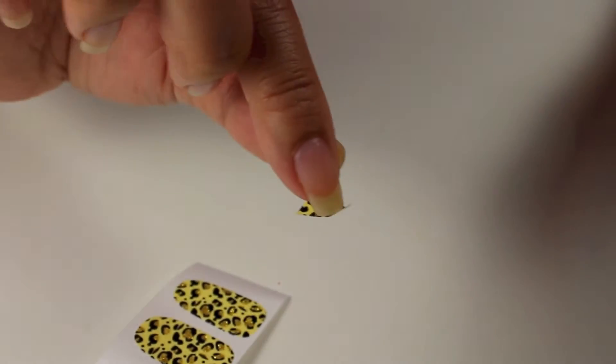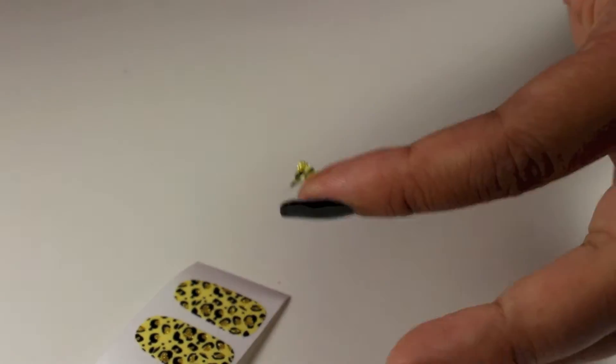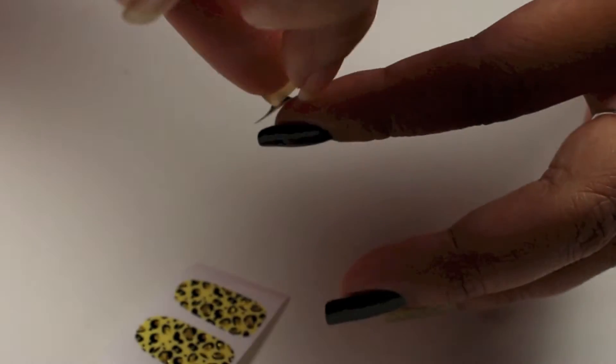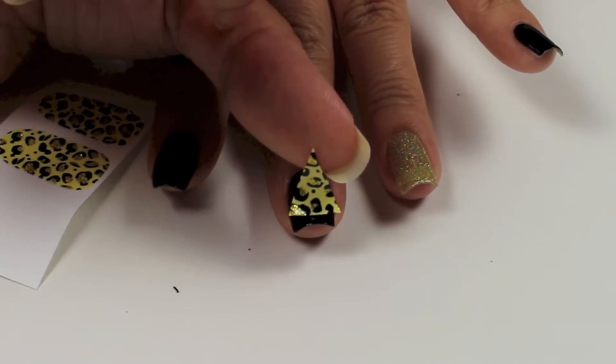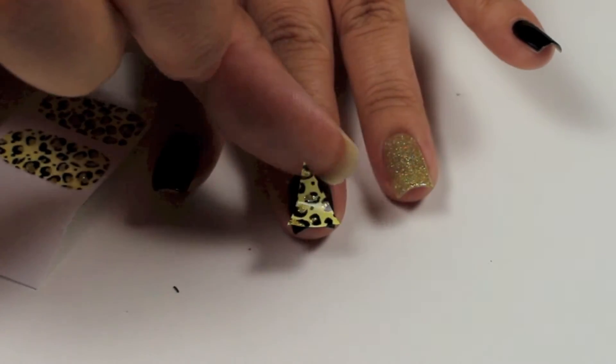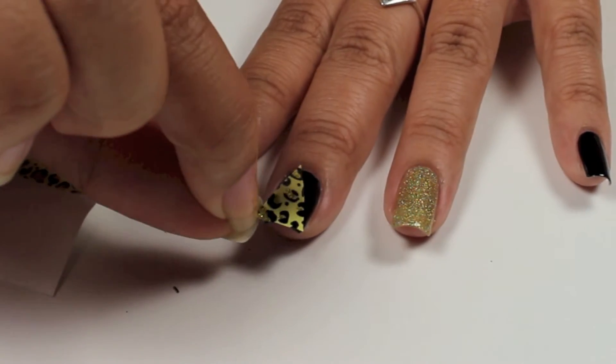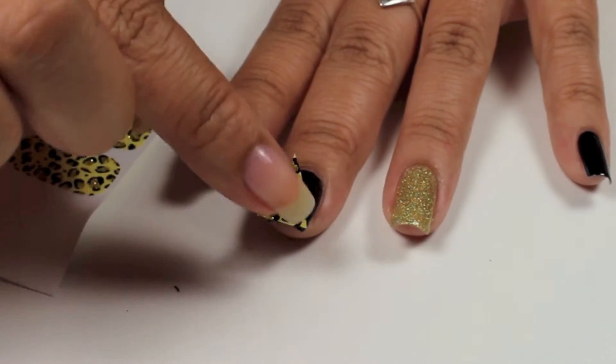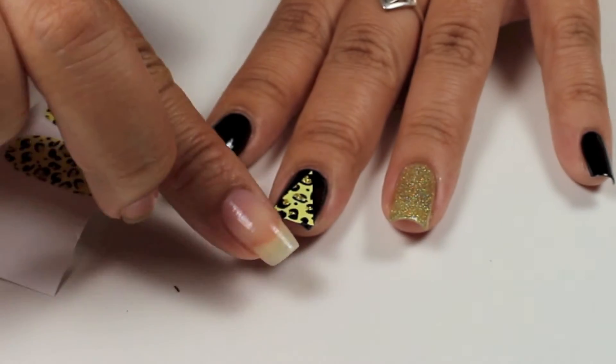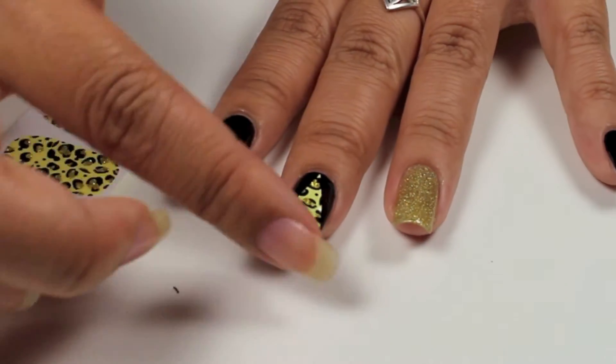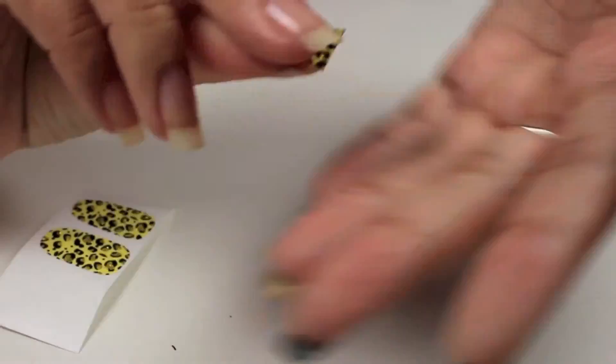Once you have the triangle, I'm going to peel off the back just like a sticker. I've already pre-painted my nails and they're completely dry with Liquid Leather from China Glaze, and then on my accent nail, China Glaze Angel Wings. Then just stick it on like a sticker, tuck it underneath, and file off the excess.